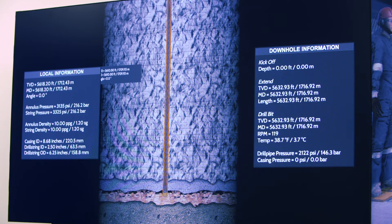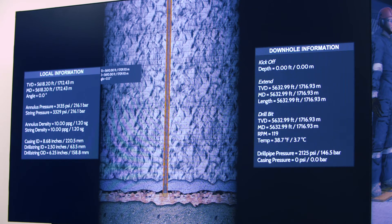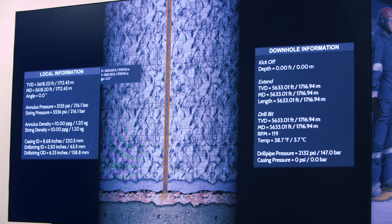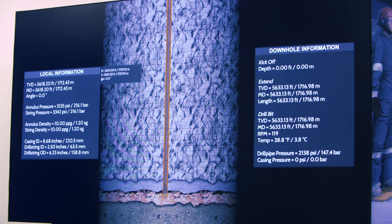For an enhanced learning experience, the downhole graphics display gives the student real-time footage of what is happening at the bit. This can easily be disabled via the instructor station, depending on the lesson or training that is being delivered.